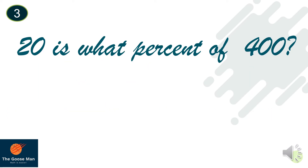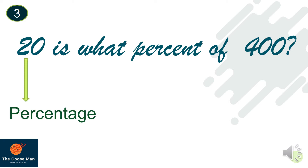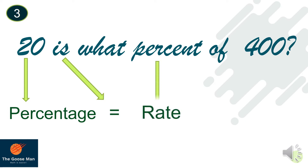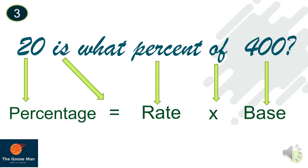Let's try another example: 20 is 1% of 400. 20 is the percentage. 'Is' is the equal-to sign. 1% is the rate because it comes before the word 'of.' 'Of' in symbol is multiplication, and 400 is our base because it comes after the word 'of.'